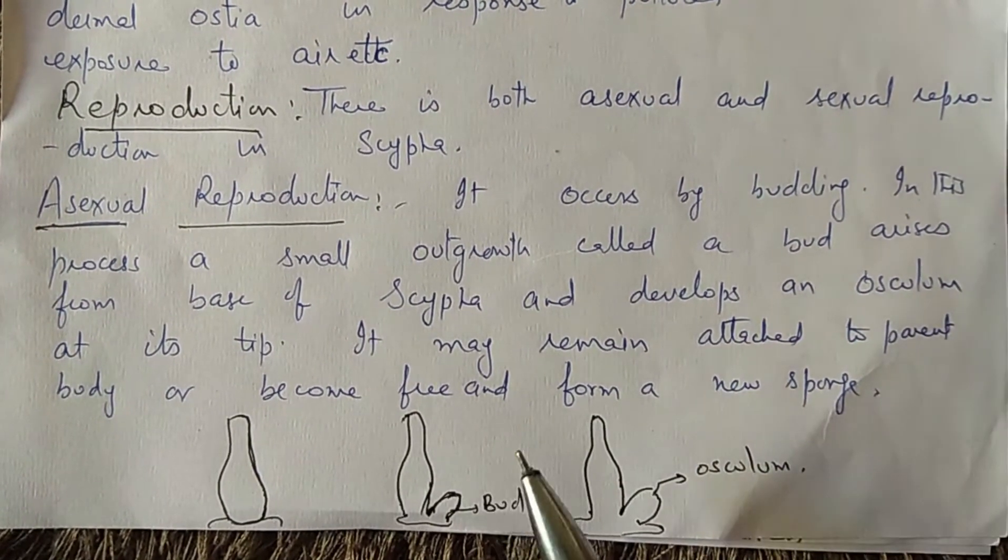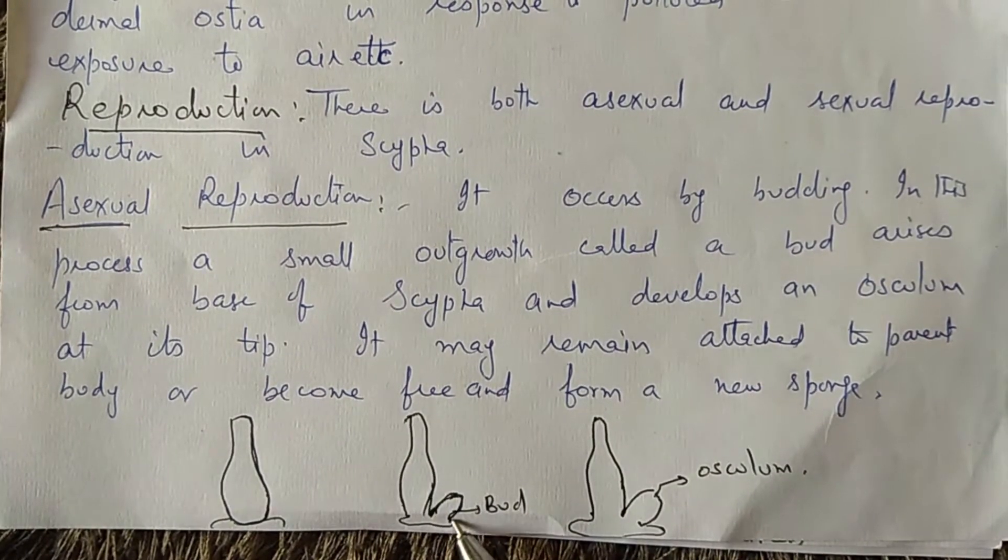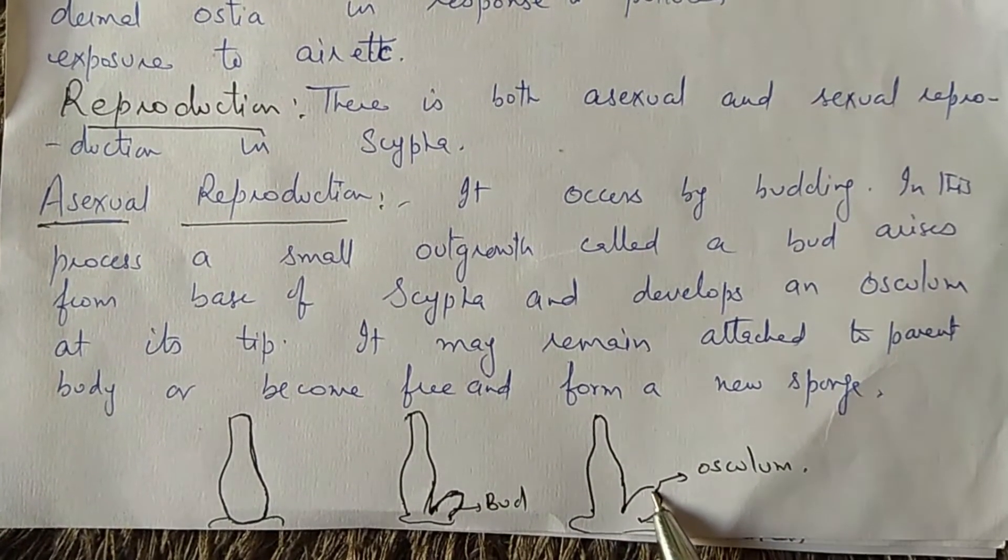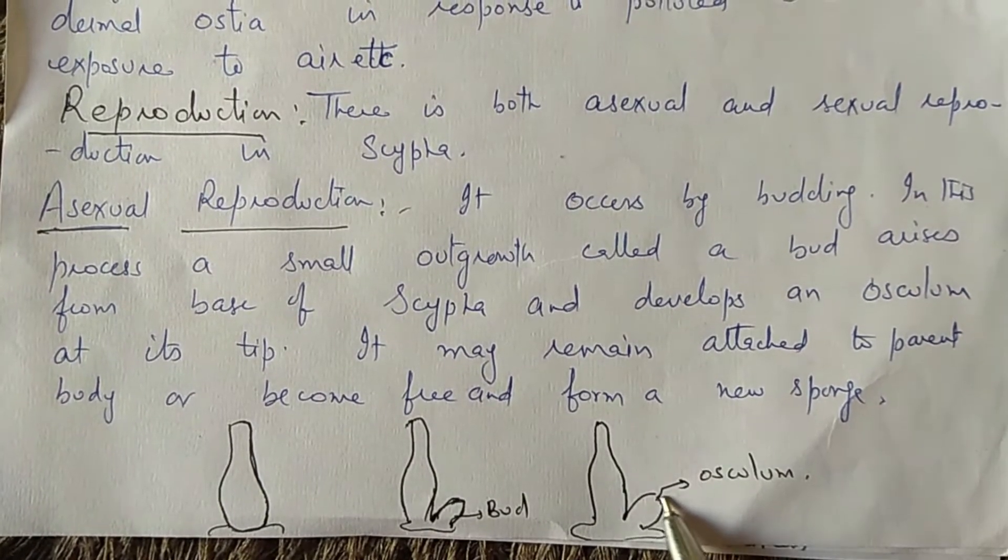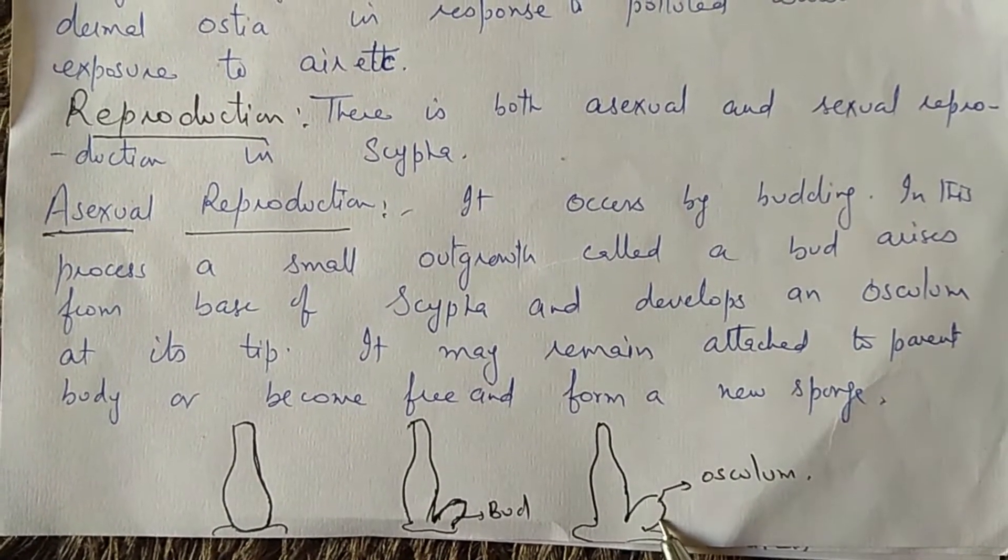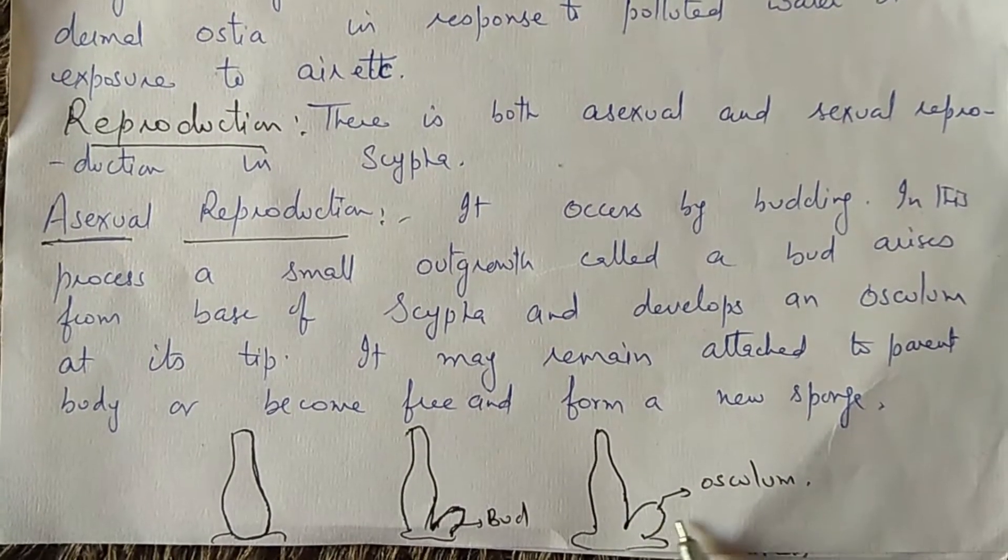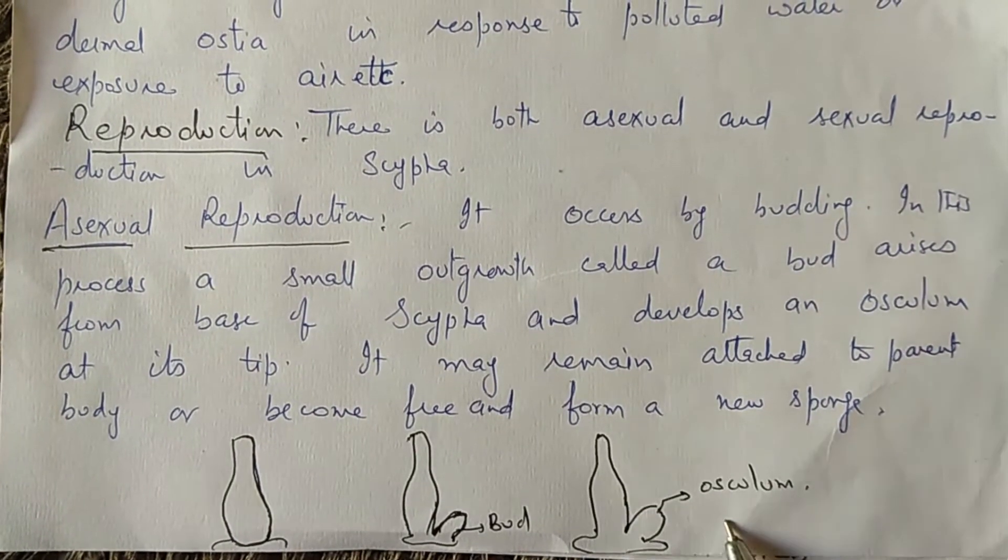Asexual reproduction occurs by the process of budding. Here, a small outgrowth rises from the base of Scypha and develops an aperture called osculum at the tip. This is a bud. The bud grows in size. It may remain attached to the parent body or may get detached and form a new Scypha.